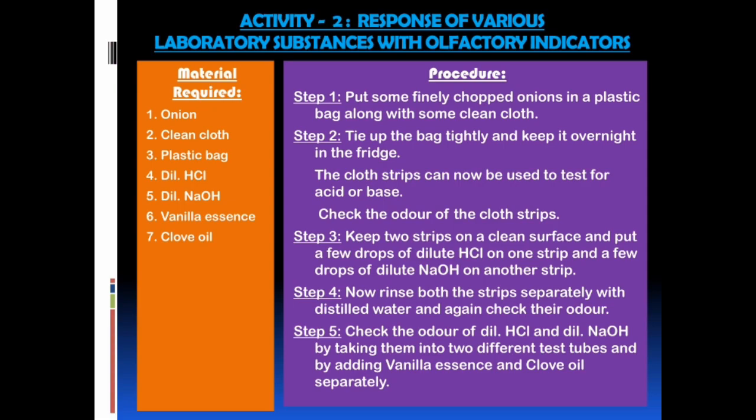Material required for Activity 2: Response of various laboratory substances with olfactory indicators. Materials needed are onion, clean cloth, plastic bag, dilute HCl, dilute NaOH, vanilla essence, and clove oil.